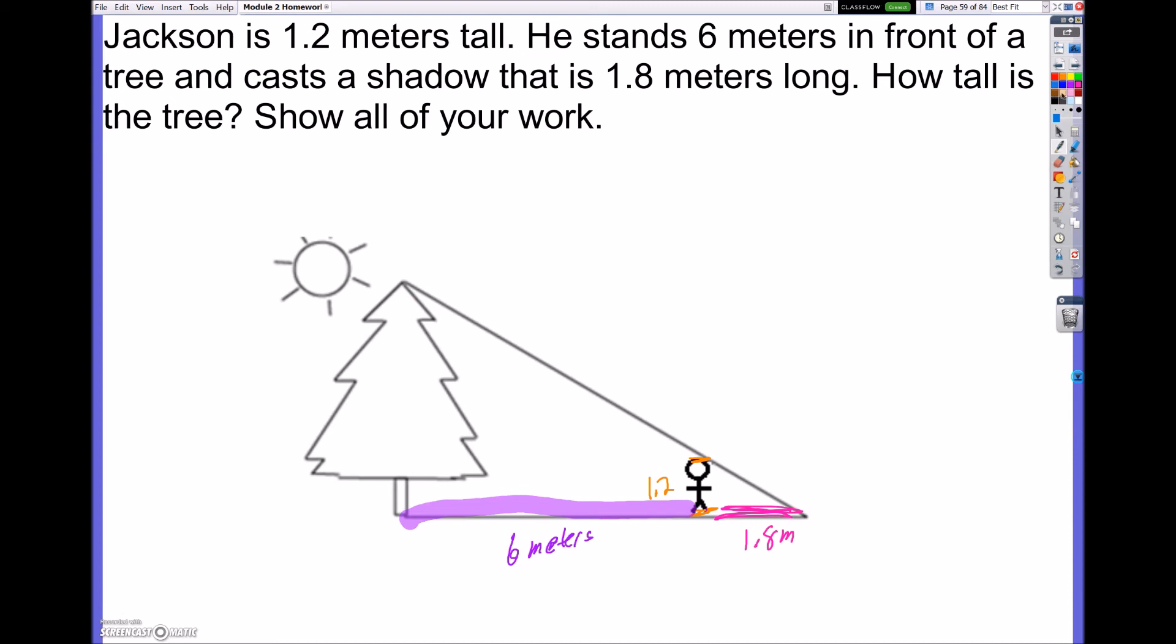How tall is the tree? So essentially what we're going to do is I'm going to have two colors. I'm going to have this green. And this is my first triangle. So this first triangle is his height, which is 1.2, and his shadow, which is 1.8. Now the second one in dark blue, it's saying how tall is the tree? So this is how tall the tree is. This is what we're figuring out. So we're going to put an X.